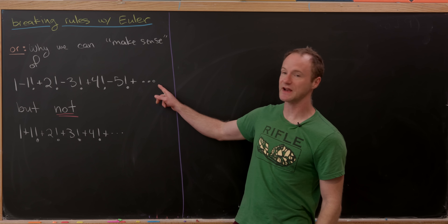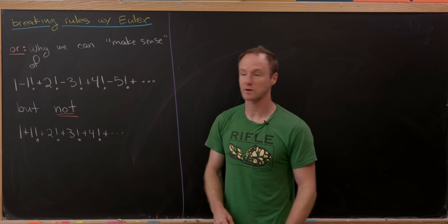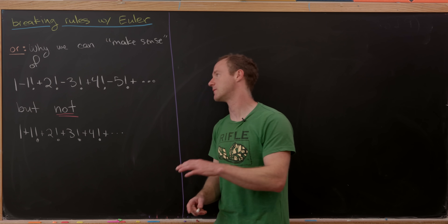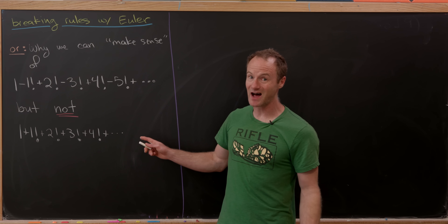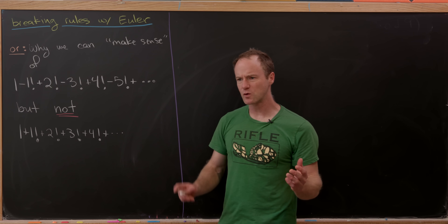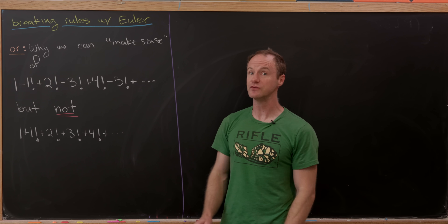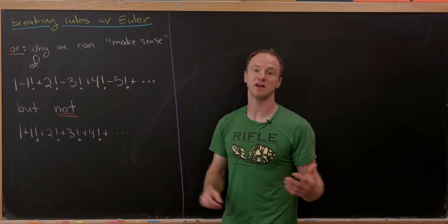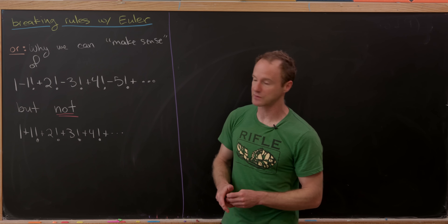We will assign a value to the following divergent series — the alternating sum of the factorials: 1 (zero factorial), minus one factorial, plus two factorial, minus three factorial, and so on. But we'll show that it's not possible to assign a value to just the sum of the factorials. I'm saying 'assign a value' instead of 'calculate the sum' because these are clearly divergent series — in the spirit of the sum of the natural numbers being minus one over 12, which has some meaning with respect to the Riemann zeta function.